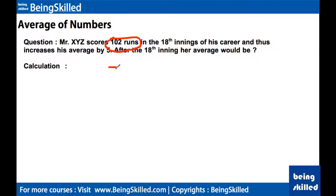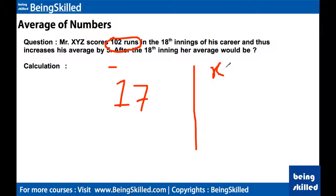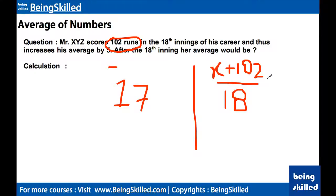We can safely assume there were 17 matches already played. We let x be the total runs Mr. XYZ had scored before the 18th inning. The equation for the 18th inning is: (x + 102) divided by 18 equals y + 5, where y was his average before. The second equation is: x divided by 17 equals y.